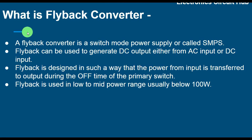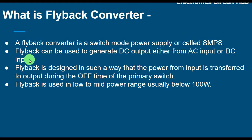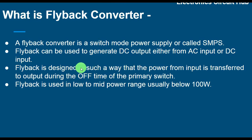The first question is: what is the flyback converter? A flyback converter is a switch mode power supply, sometimes called SMPS — S stands for switch, M stands for mode, P stands for power, S stands for supply. A flyback converter can be used to generate DC output either from AC input or DC input. A flyback is designed so that power from the input is transferred to the output during the off time of the primary switch. A flyback is used in low to mid power range, usually less than 100 watts.